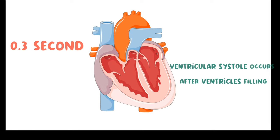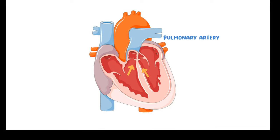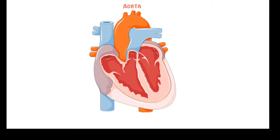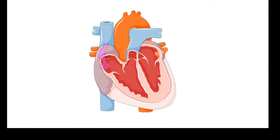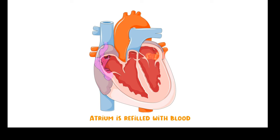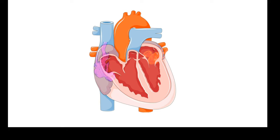When the ventricles are filled, ventricular systole occurs, which takes about 0.3 second. The blood from the right ventricle goes to the pulmonary artery and then to the lungs, and from the left ventricle the blood goes to the system through the aorta. After ventricular systole, the heart enters a relaxed state in which atrium refilling occurs, known as complete cardiac diastole.